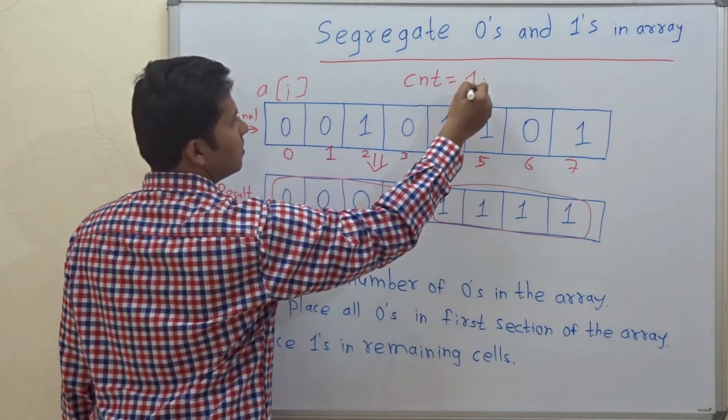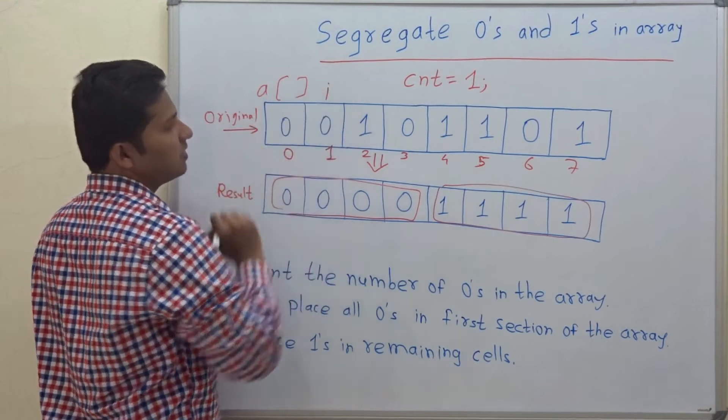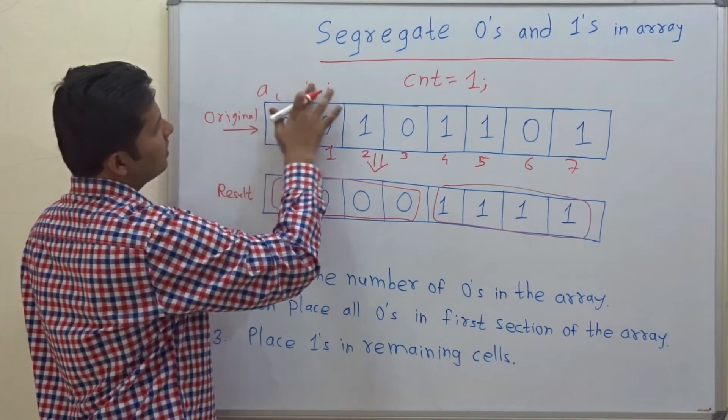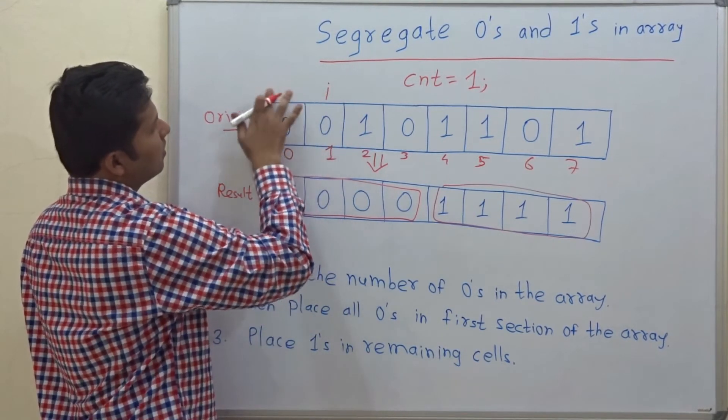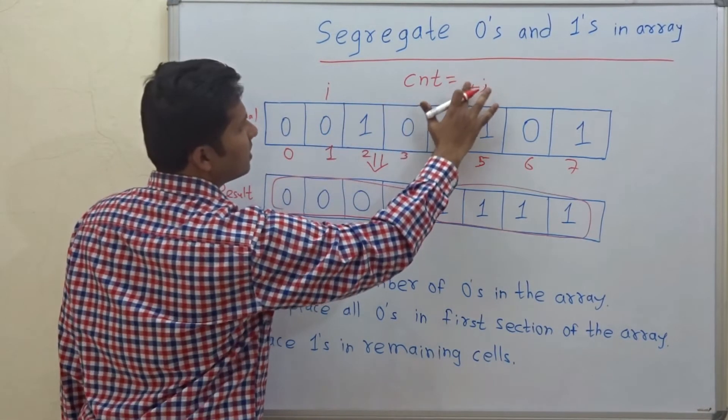So increment the counter. So it will become 1. Now i will be incremented here. So again see whether element at ith position is 0. Yes. So increment the counter.